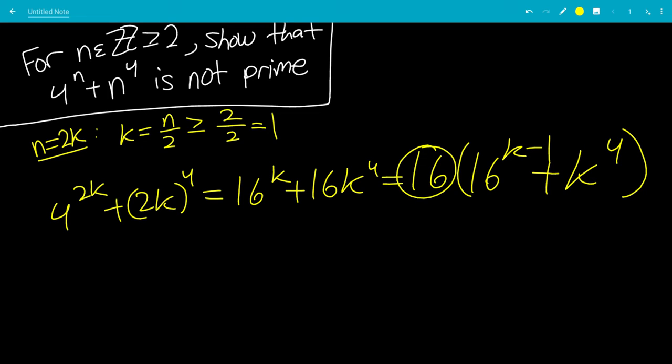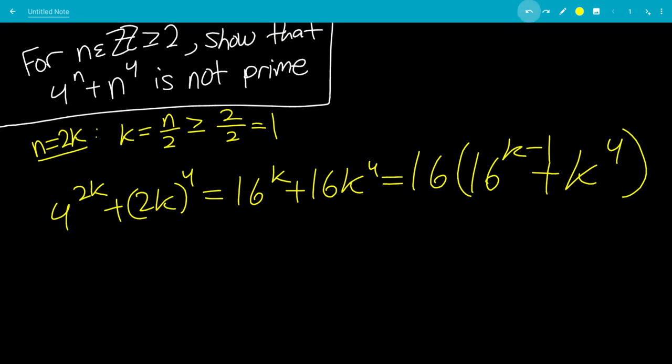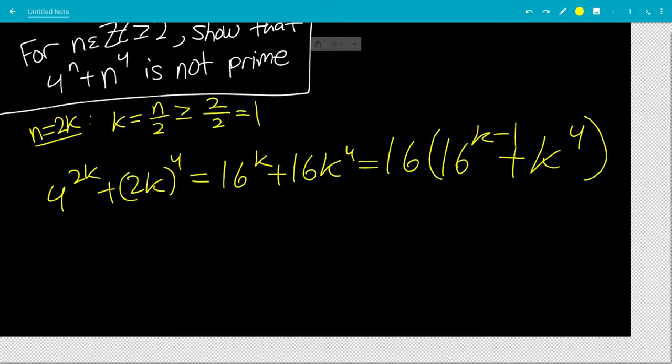16 is obviously an integer. k to the 4th, when k is bigger than or equal to 1, is an integer. And since k minus 1 is bigger than or equal to 0, the second factor is bigger than or equal to 1, so it's a valid integer factor. This case checks out.